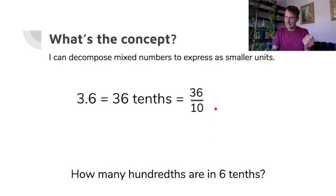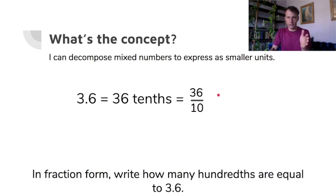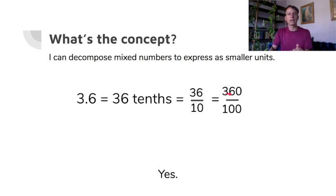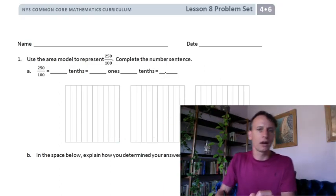How many hundredths? In three ones: one is 100 hundredths, so three ones is 300 hundredths. Plus the six tenths — six dimes is 60 cents — 60 hundredths. So 300 hundredths plus 60 hundredths is 360 hundredths. Notice: if I place a zero after three and six tenths, I'm not changing the value, but I'd read it as three hundred sixty hundredths.